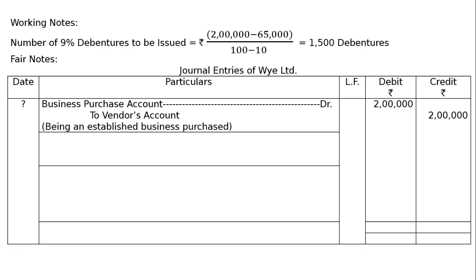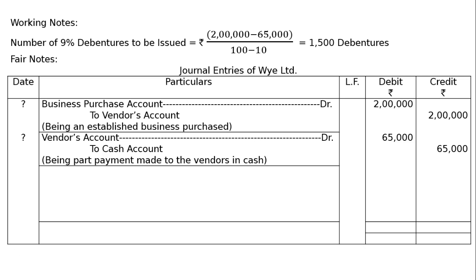When we are buying an established business, that is Business Purchase Account debit, then we paid Rs. 65,000 first by cheque to the vendors. Vendor's Account debited to Bank Account Rs. 65,000 — being part payment made to the vendors by cheque. Please write 'by cheque', not 'cash'.